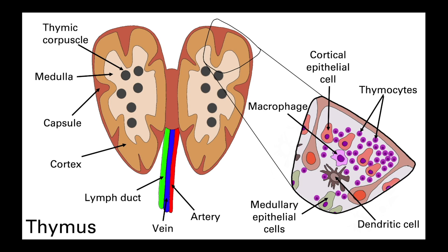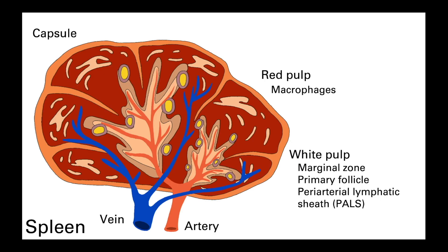The thymus sits directly above the heart and is most active during infancy, steadily decreasing in activity and becoming atrophied — shrinking in size — as we age. T lymphocyte progenitors are produced by the bone marrow and migrate to the thymus, where they interact with thymic stromal and epithelial cells that guide their maturation and development. The thymus is structured with distinct regions including the medulla and cortex. Less mature T cells migrate from the cortex to the medulla as they develop, and once fully matured, leave the thymus to circulate through the blood and enter lymph nodes in the paracortical regions.